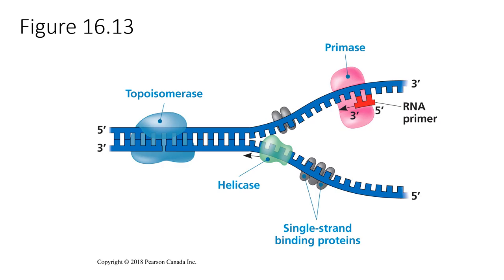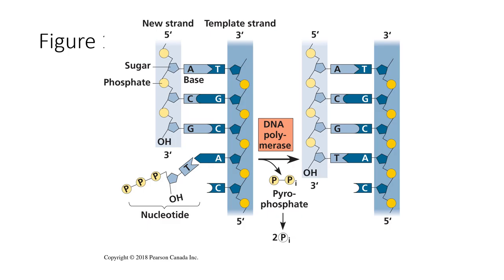Another protein critical for the start of replication is primase. Primase recognizes single-stranded DNA, creates an RNA primer, and synthesizes it from five prime to three prime based on complementary base pairing. The primer is RNA, which simply has a different backbone because of the OH hydroxyl group on the sugar.